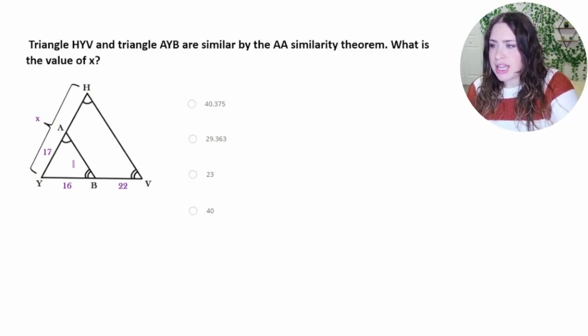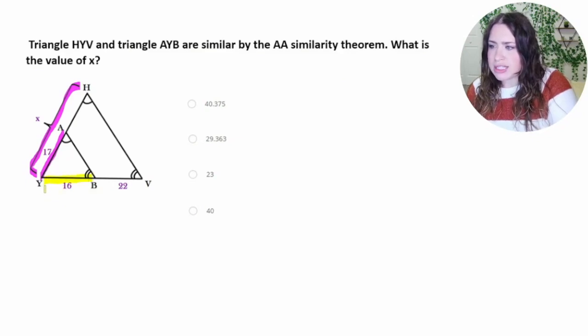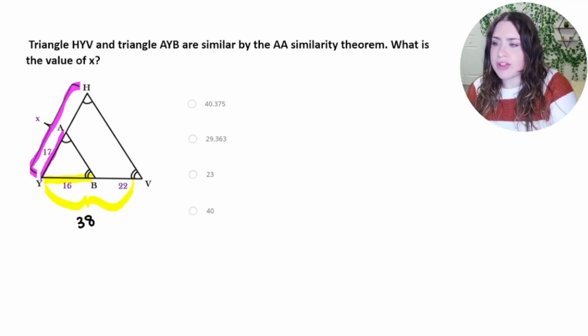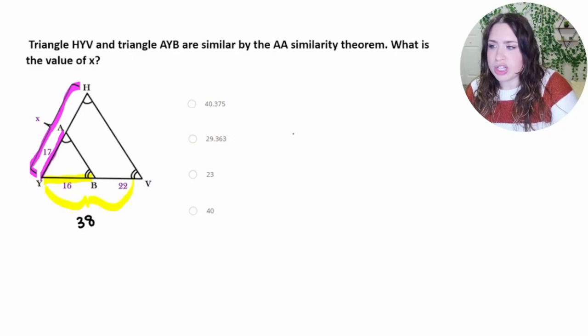So when I say proportional, I mean that the scale factor between, say, side AY and this whole length X is going to be the same scale factor used between YB, which is 16, and this whole dimension, which we're going to have to add 16 and 22 together to get 38. That's going to be the same scale factor. So you can either figure out what the scale factor is between 16 and 38 and apply that to find here. Or if it's not as easy to spot, which is going to be the case for this one, we can set up a proportion.